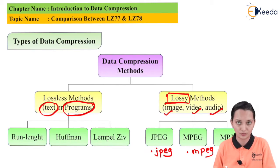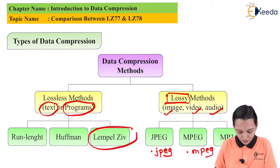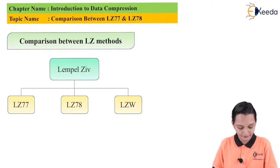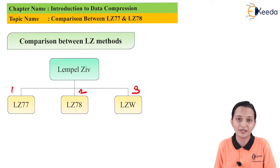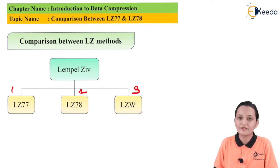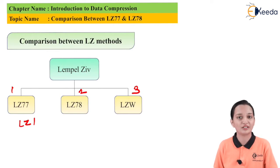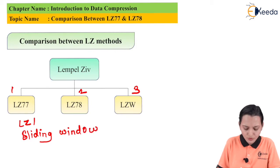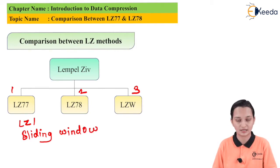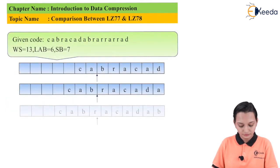In this particular video, we are interested to study Lempel-Ziv techniques. In the Lempel-Ziv techniques, the first one is LZ77, the second is LZ78, and the third is LZW. LZ77 is also known as the LZ1 technique because it was derived first. It is also known as the Sliding Window technique.